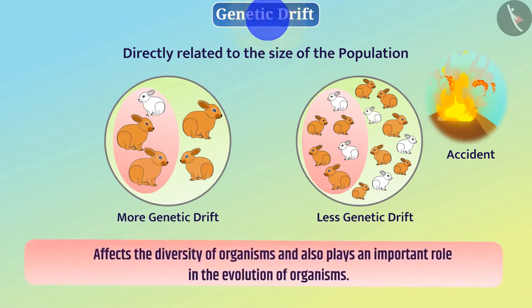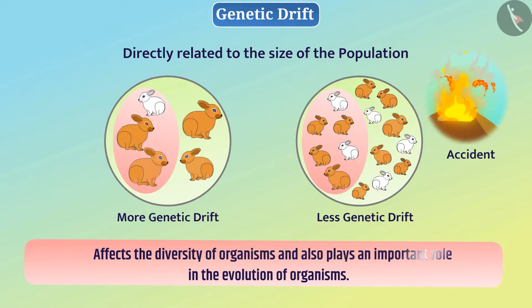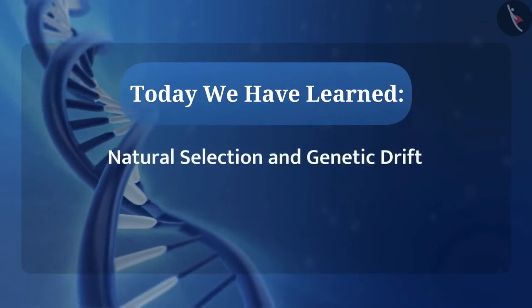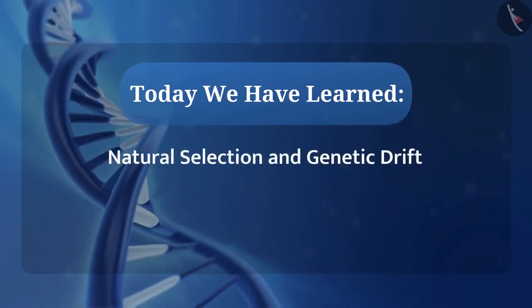So, genetic drift affects the diversity of organisms and also plays an important role in the evolution of organisms. Now you must have understood natural selection and genetic drift. Today, we have learned about natural selection and genetic drift.